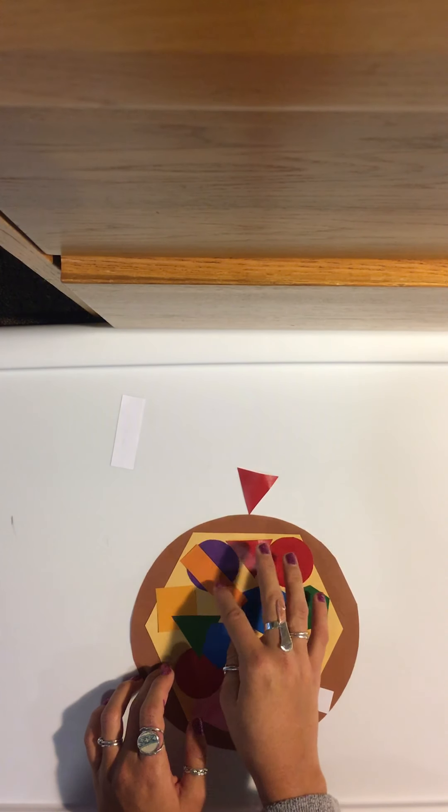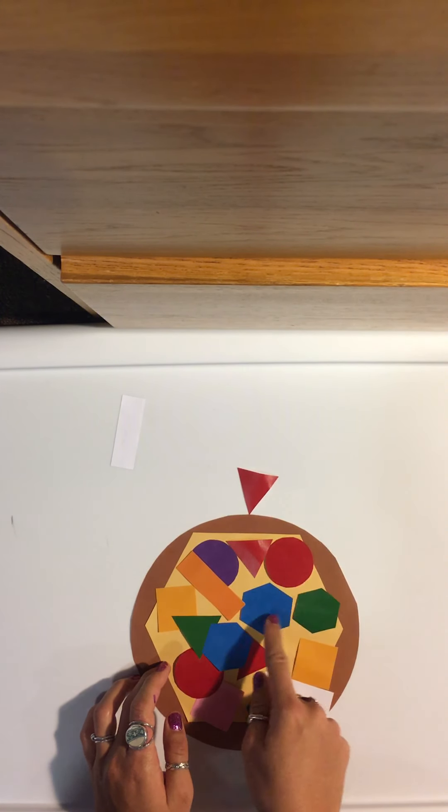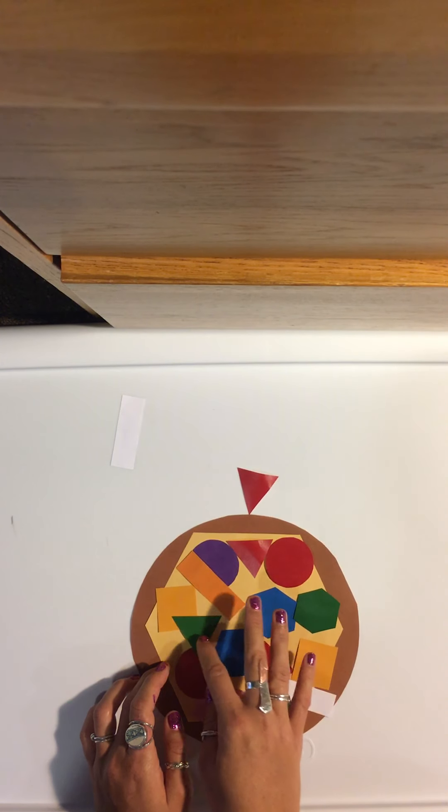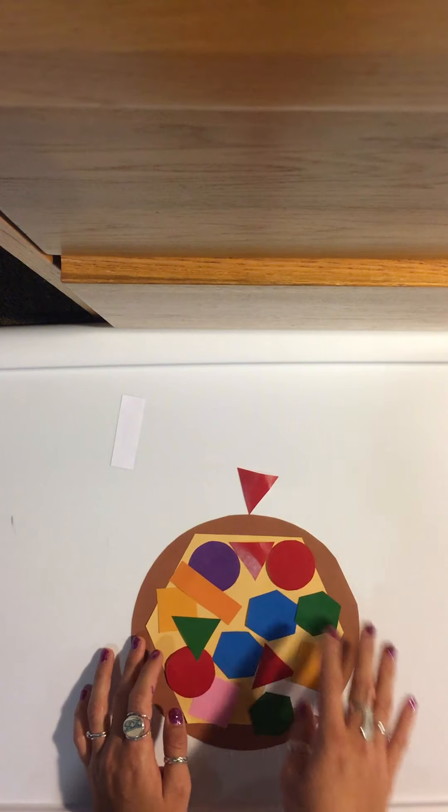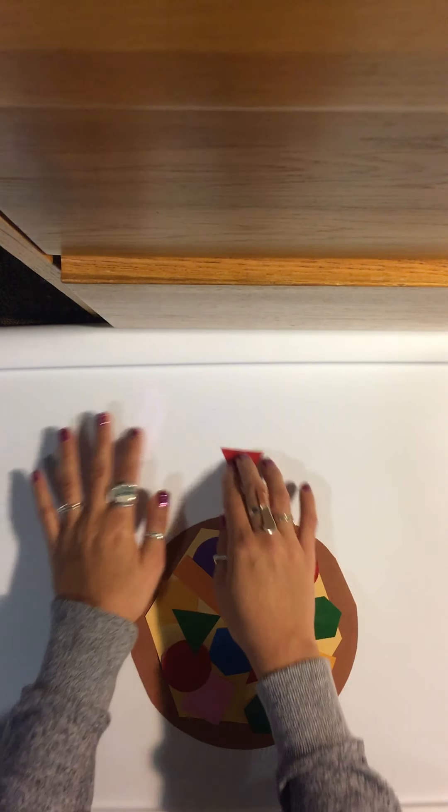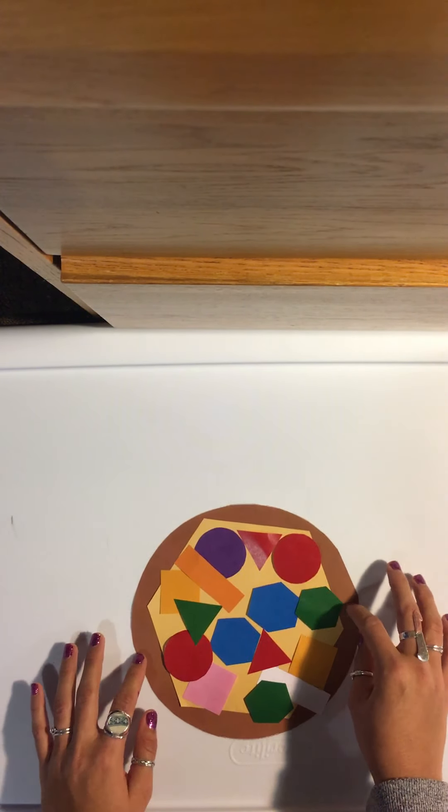You can put as many toppings as you want, as long as your shapes aren't covering each other too much. As long as they're not overlapping too much. I can see all my shapes pretty well still. So I think that looks pretty good.